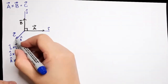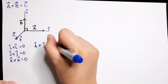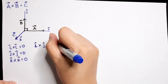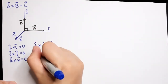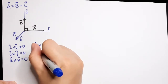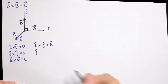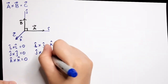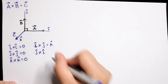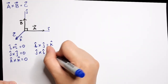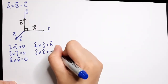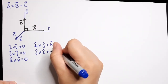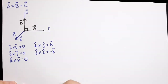For example, i cross j gives positive k. But if we have j cross i, the answer will be negative k. So the answers are not the same — they are opposite in sign.